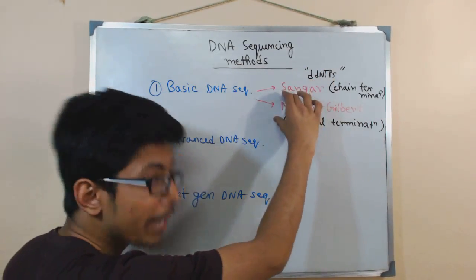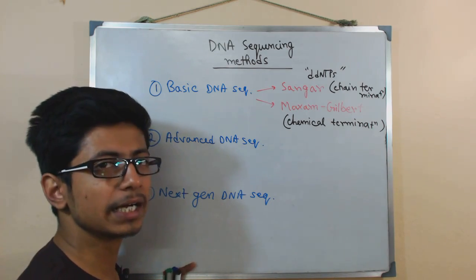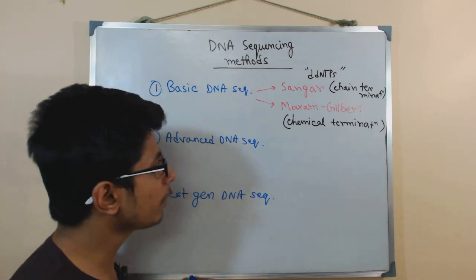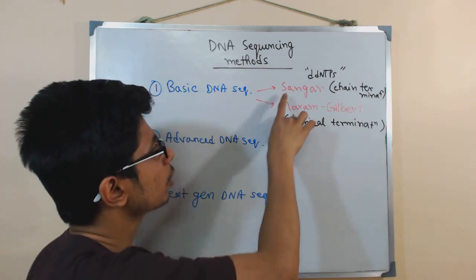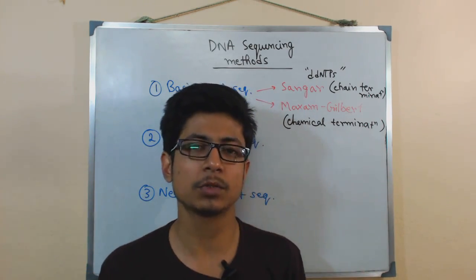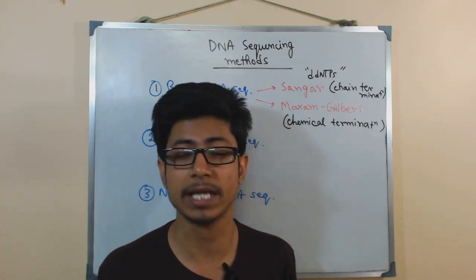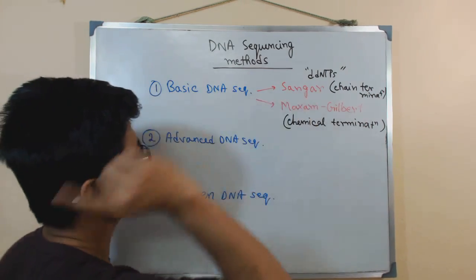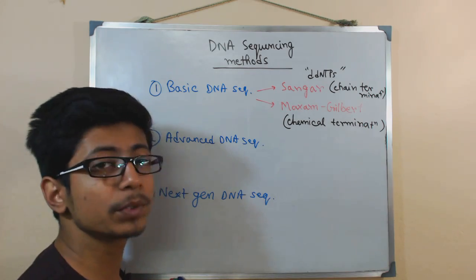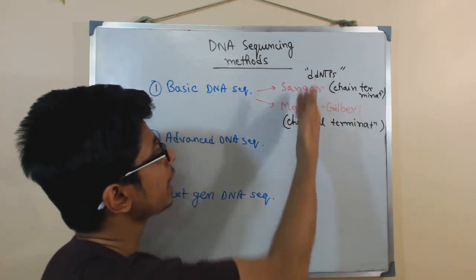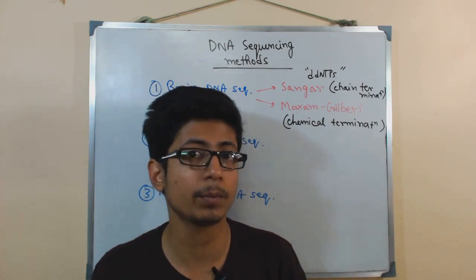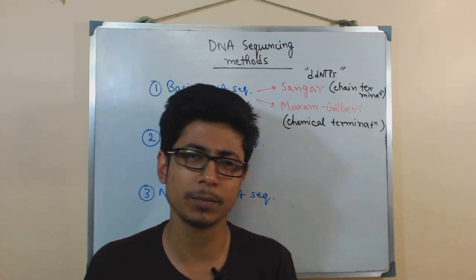Both Sanger and Maxim Gilbert sequencing are very expensive. For example, sequencing one million bases using Sanger costs around 1,000 USD. Since the human body has billions of bases, sequencing the entire human genome would cost millions of dollars — not cost effective. They also can only synthesize very small stretches of nucleotides, making them unsuitable for large genome projects like the Human Genome Project.